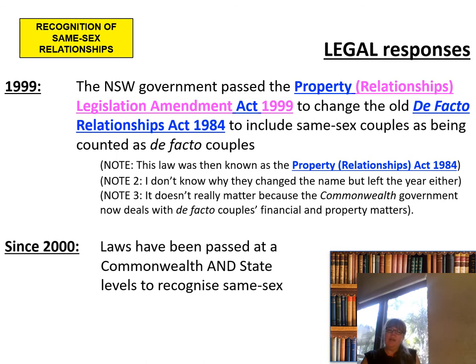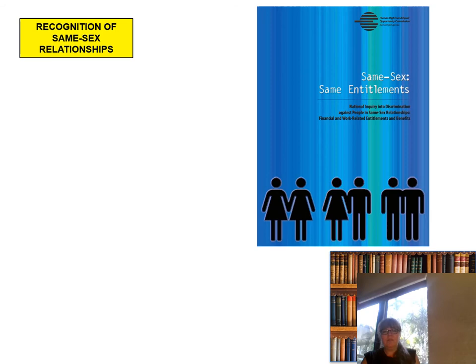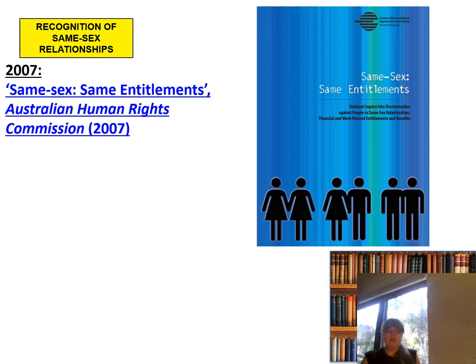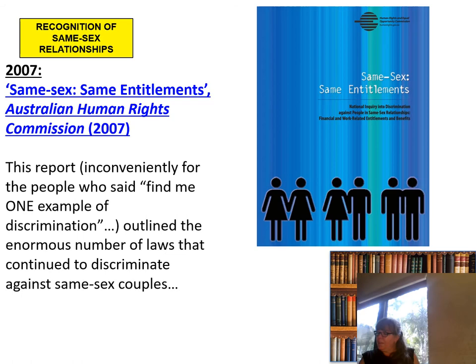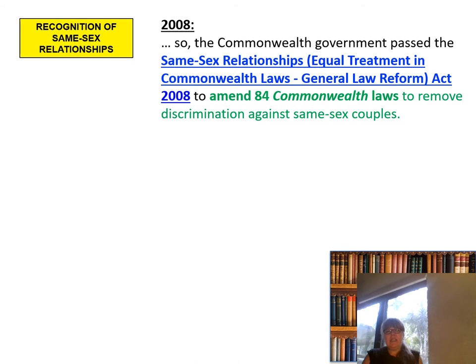Since 2000, laws have been passed at Commonwealth and state levels to recognise same-sex relationships. In 2007, the Same-Sex, Same Entitlements Human Rights Commission put out a report outlining the enormous number of laws that continued to discriminate against same-sex couples. In 2008, the Commonwealth government passed the Same-Sex Relationships Equal Treatment in Commonwealth Laws General Law Reform Act to amend 84 Commonwealth laws to remove discrimination against same-sex couples.